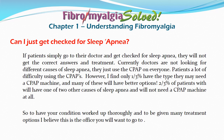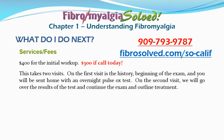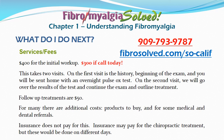To have your condition worked up thoroughly and to be given many treatment options, I believe this is the office you want to go to. The cost is $400 for the initial workup, but if you call today it is reduced to $300. This takes two visits: on the first visit there is the history, beginning of the exam, and you will be sent home with an overnight pulse ox test. On the second visit, we go over the results and continue the exam and outline treatment. Follow-up treatments are $50. For many, there are additional costs such as products to buy and for some there are medical and dental referrals. Insurance does not pay for this, though insurance may pay for chiropractic treatment done on different days.